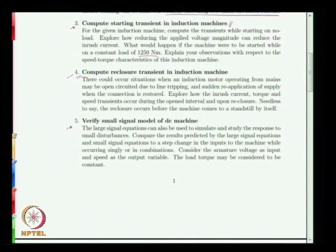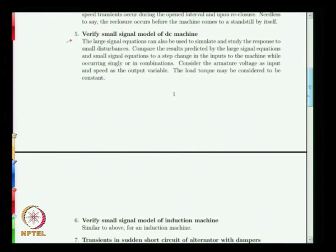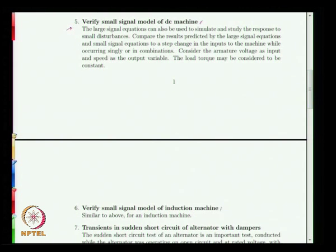The fifth assignment: we derived small signal models for the DC machine. Compare the behavior estimated by the small signal model against the unapproximated large signal model equations. Apply the same disturbance to both models — subtract the steady-state response from the large signal model response before comparing. This gives an idea of how accurate or inaccurate the small signal model is relative to the large signal model, and can be done for both the DC machine and the induction machine.